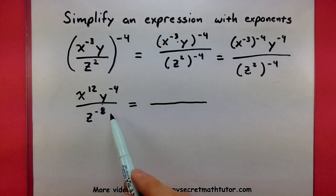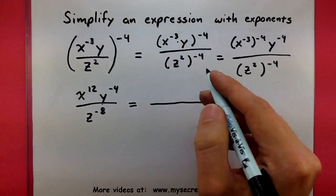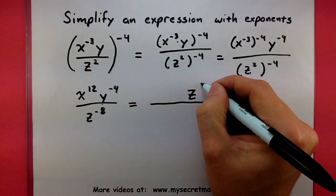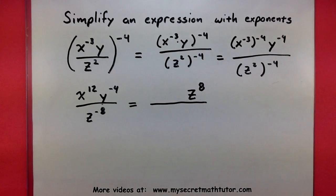So if I have z to the negative 8 in the bottom, I'm going to move that to the top part of my fraction and then make its exponent positive. Just like that.